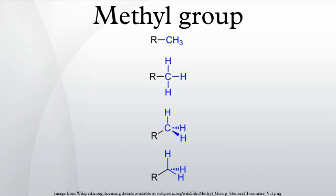Deprotonation: certain methyl groups can be deprotonated. For example, the acidity of the methyl groups in acetone is about 10–20 times more acidic than methane. The resulting carbanions are key intermediates in many reactions in organic synthesis and biosynthesis. Fatty acids arise in this way.